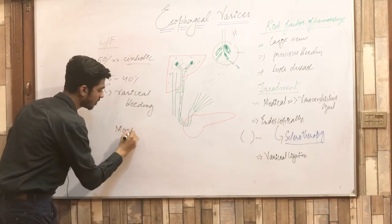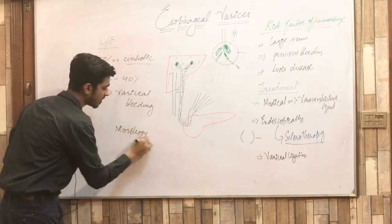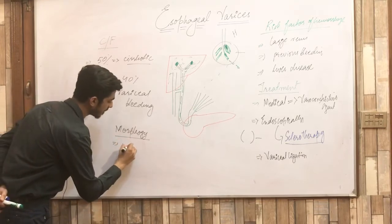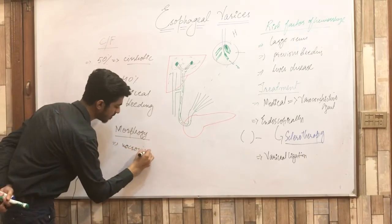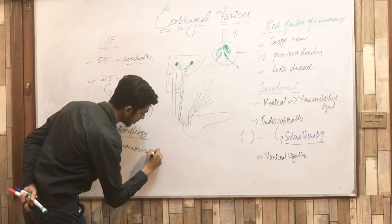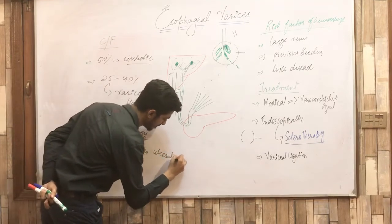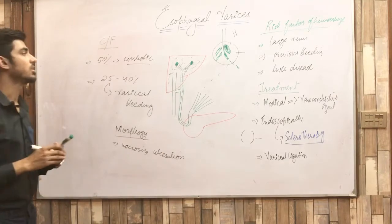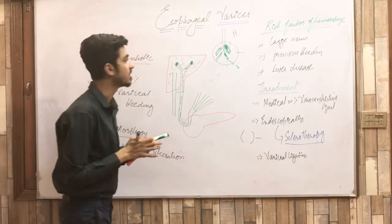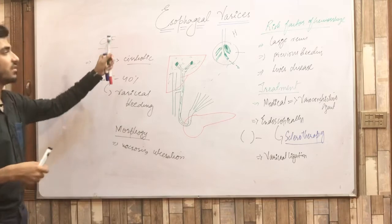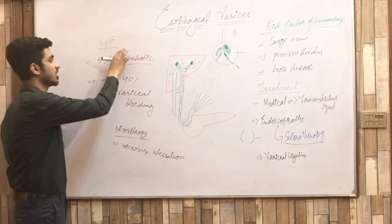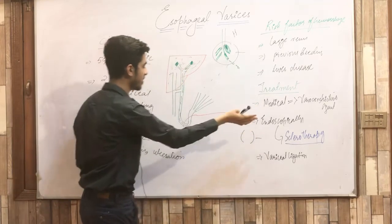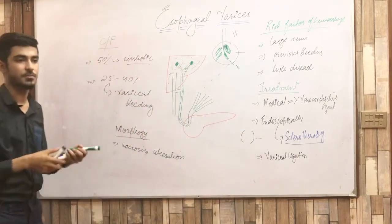Regarding the morphological features of esophageal varices: if rupture occurs, you can observe necrosis or ulceration in the patient. So this covers the esophageal varices — definition, clinical features, risk factors, treatment, and morphology.